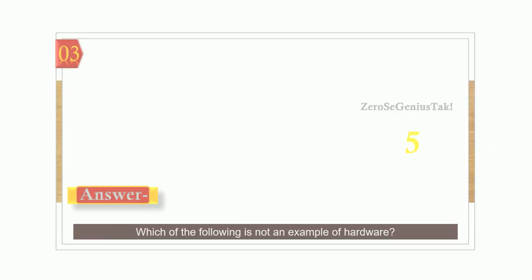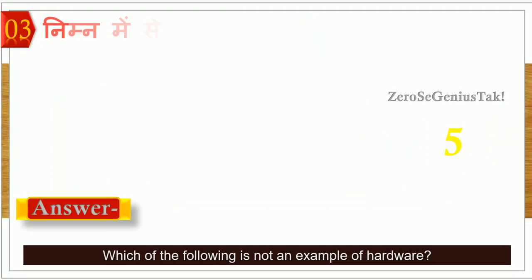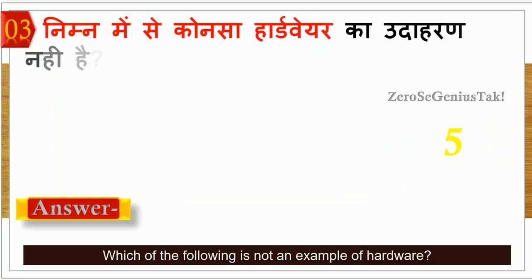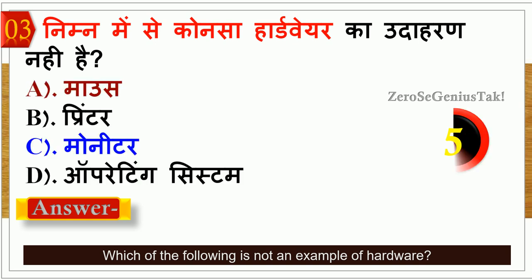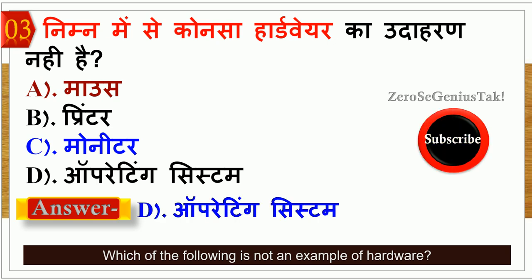Next question: Which of the following is not an example of hardware? There are 4 options, and one option is not a hardware example. The right answer is option number D — Operating System.